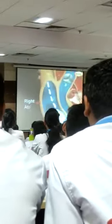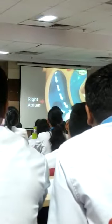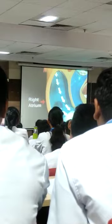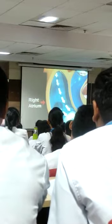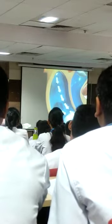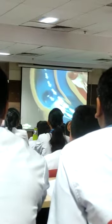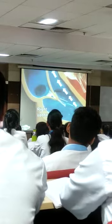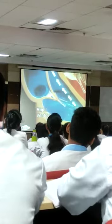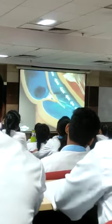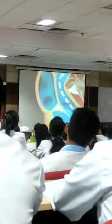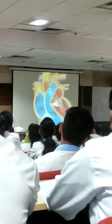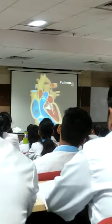The right upper atrium receives deoxygenated blood from the whole body, which is pumped into the right ventricle, and it sends the blood to the lungs for oxygenation via the pulmonary artery.